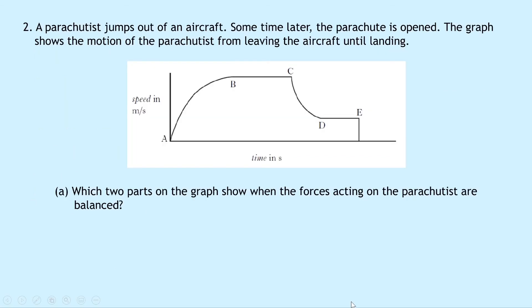Question two says that a parachutist jumps out of an aircraft. Some time later, the parachute is opened. The graph shows the motion of the parachutist from leaving the aircraft until landing. You'll notice this is the exact same shape of graph that we just had in question one. Part A says: which two parts in the graph show when the forces acting on the parachutist are balanced?